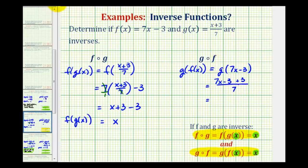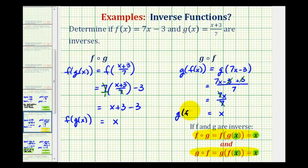If we simplify the numerator, notice how we have minus three plus three, that's zero. So we have seven x all over seven, which does simplify to x. So g of f of x is also equal to x, therefore these two functions are inverses.